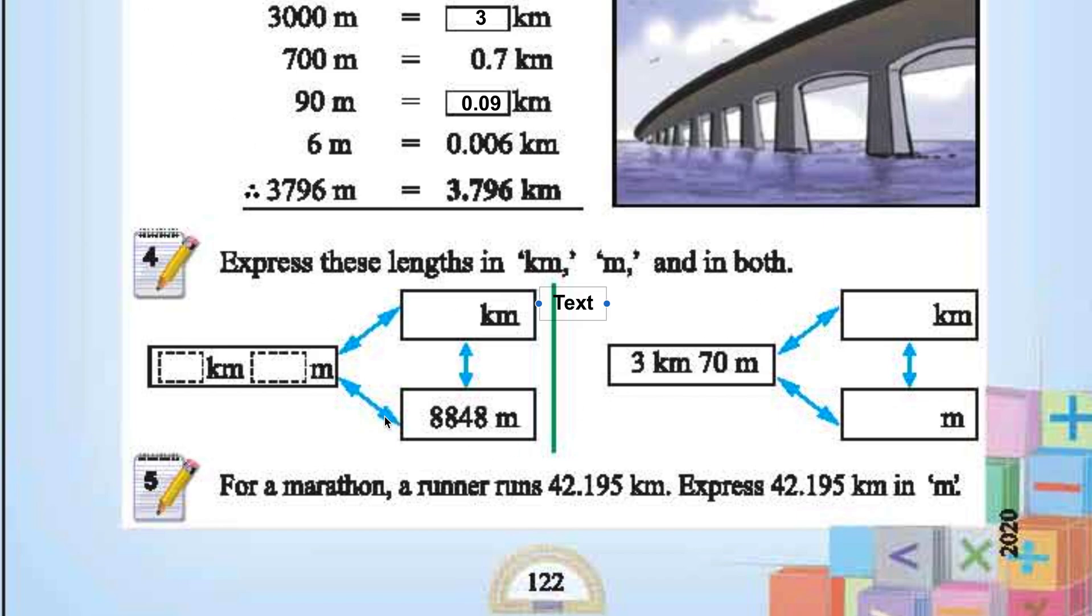8848 meters is 8.848 kilometers. 8 kilometers 848 meters. 3 kilometers 70 meters is 3.07 kilometers.